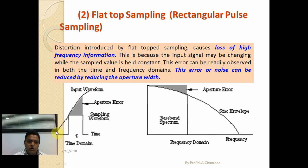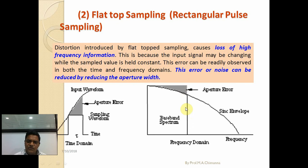In flat top sampling, the aperture error occurs because the rectangular pulses cannot follow the information-bearing signal, resulting in a gap between the sampling waveform and the input waveform. This error is called the aperture error. In the frequency domain, the baseband spectrum has a sinc envelope, and the discrete signal or pulse train cannot follow it completely, generating the aperture effect or aperture error.